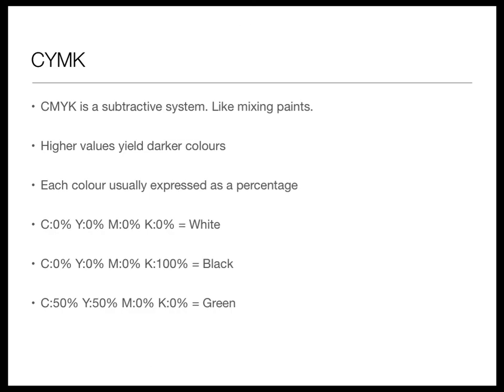Higher values in CMYK yield darker colors — much easier to visualize if you think back to mixing paints in primary school. Blue and yellow gives green. So if you have no cyan, no magenta, no yellow, and no black on a white page, you get white. With 100% black you get black. And 50% cyan, 50% yellow, zero magenta, zero black — mixing cyan and yellow gives green.